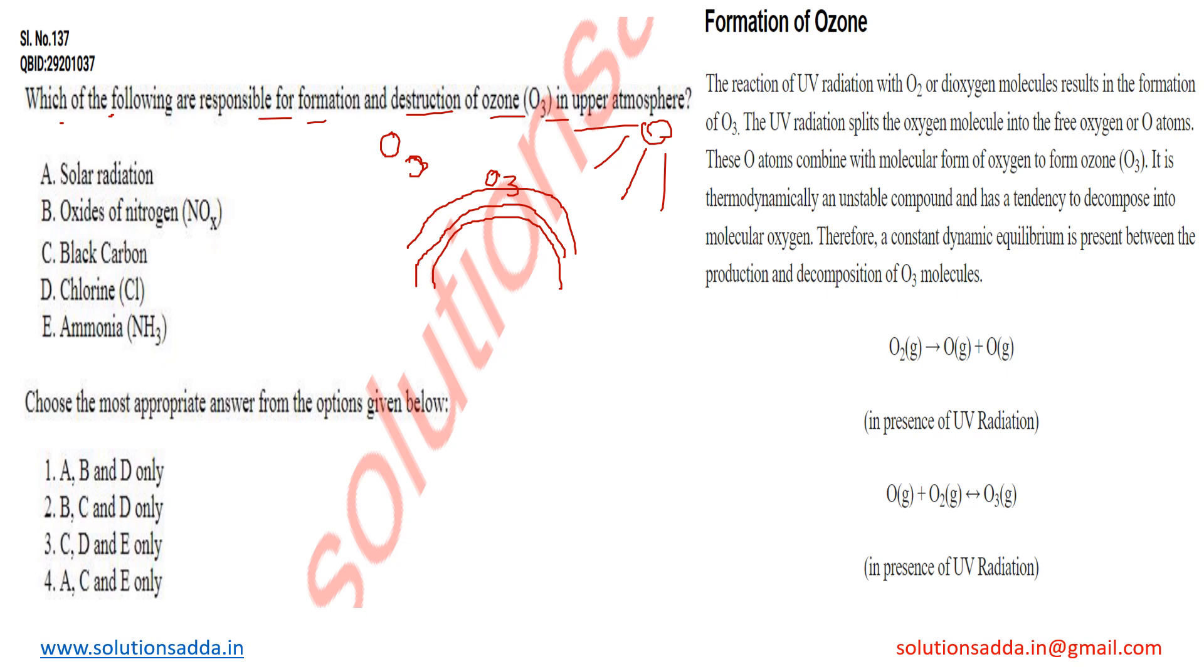So O3 is a very important part of our environment and there are some things which can form and which can destruct O3. An important thing to understand here is the formation of ozone, which we can do with the help of solar radiation.